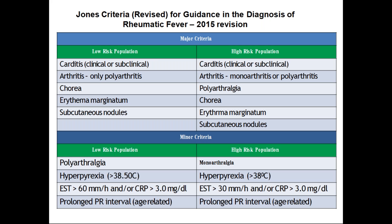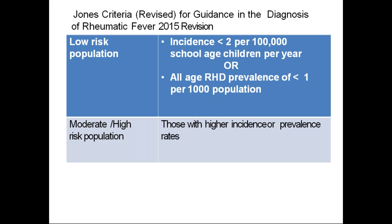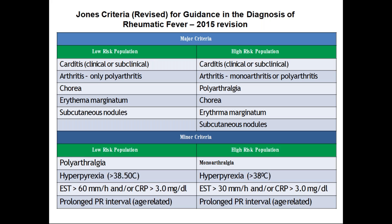Before going to the criteria, you must know what is low-risk and what is moderate or high-risk population. High-risk population is those with higher incidence or prevalence rates. In low-risk population, carditis — both clinical and subclinical — counts as a criterion. Clinical carditis shows audible murmurs; subclinical carditis cannot be found clinically but has echocardiographic findings. Both must be included.